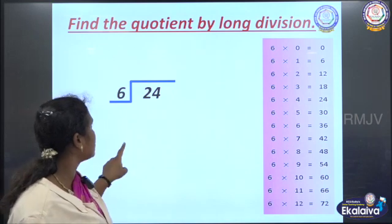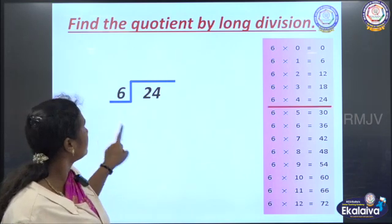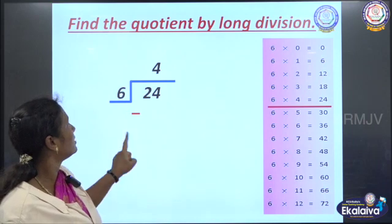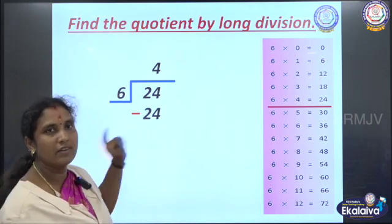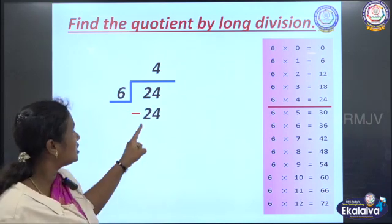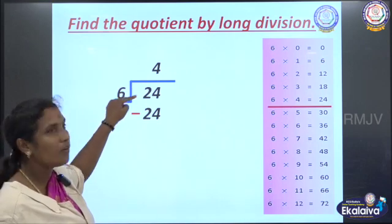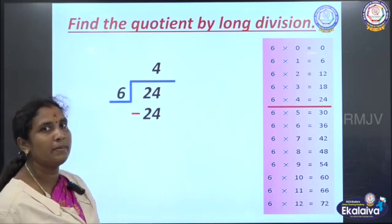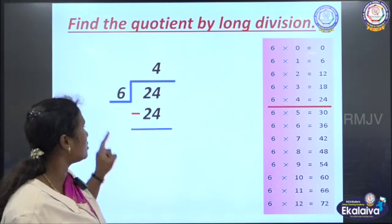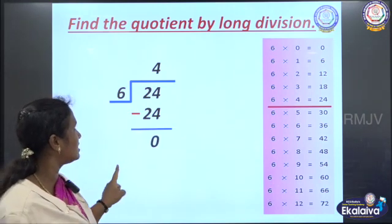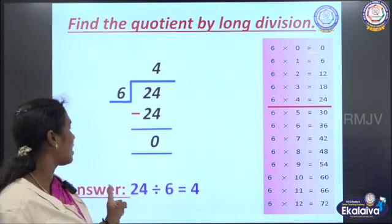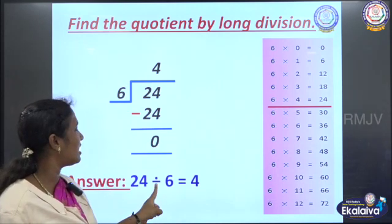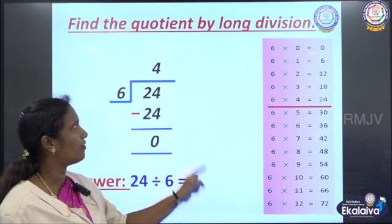So we write 4, place the subtraction symbol, and write 24. Now we have 24 and 24 — same number means what do we place? You are right — we place 0 here. So our answer is 24 divided by 6 equals 4.